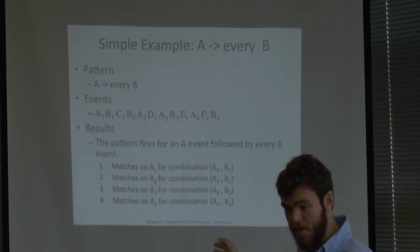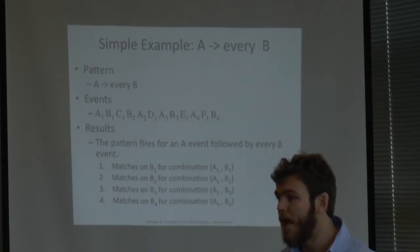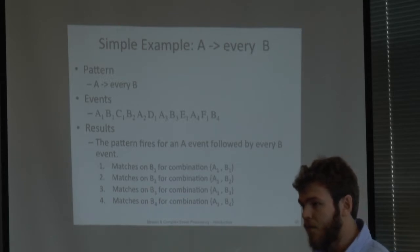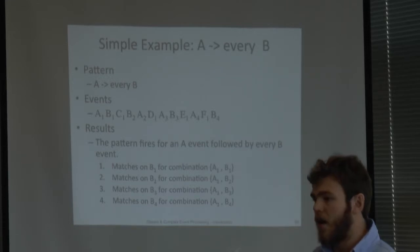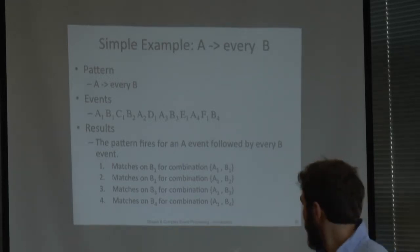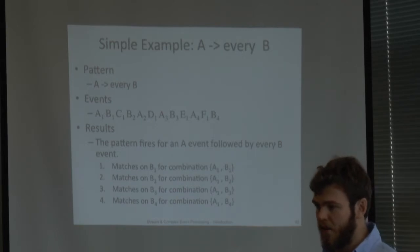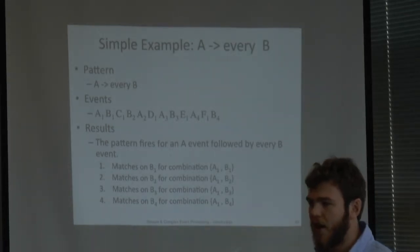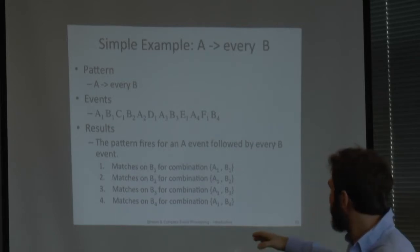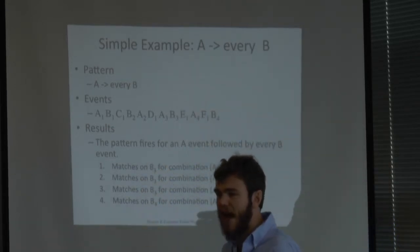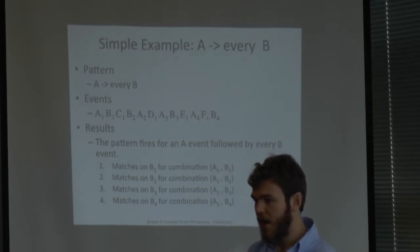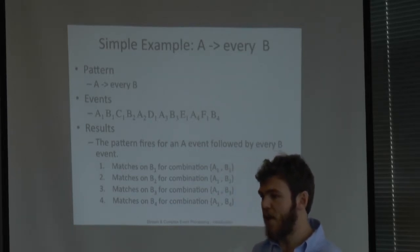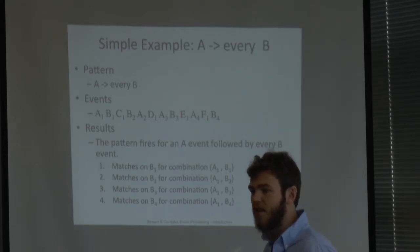Now with A followed by every B: it triggers for every B in the stream. The first is B1 with A1. Then B2 triggers for A1 again because we are evaluating all B and this pattern is still valid. For B3, A1 is still valid. B4 again triggers for A1. So the pattern is re-evaluated any time a B comes, and it starts from the first A we have in the stream - not the last one.